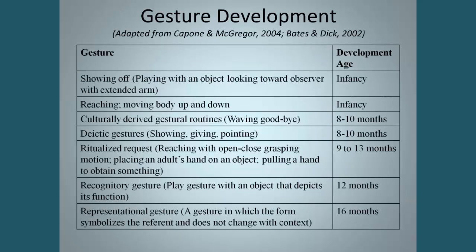Another really important piece of early communication is gesture development. One of the important early red flags to look for is that kind of gesture development. In infancy, you see showing off, playing with an object, looking towards an observer with an extended arm, reaching, moving body up and down. By 8 to 10 months, you see more typical culturally-derived gestures such as waving goodbye, deictic gestures like showing and giving and pointing, and ritualized requests such as reaching with an open-closed grasping motion meaning 'want,' or placing an adult's hand on an object, pulling a hand to obtain something.